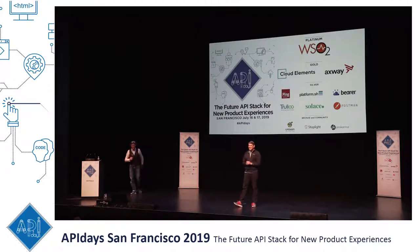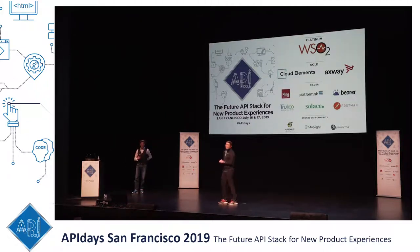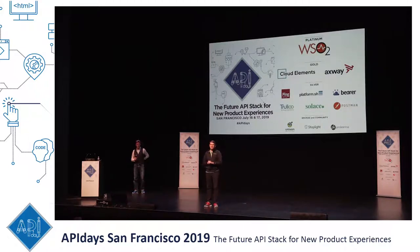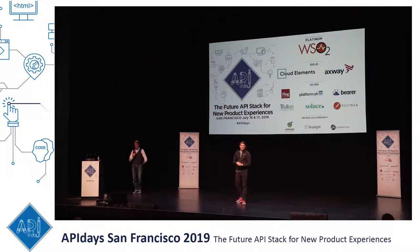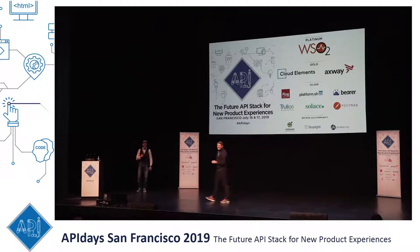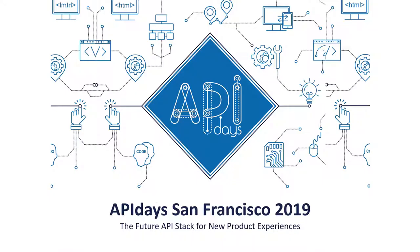One more question: what was that white code? Auth2 — authorization code flow. The code? It was just the chef's code that we had over there. I thought it would be cool so people wake up. Thanks again. Thank you very much, guys.